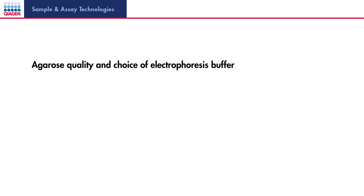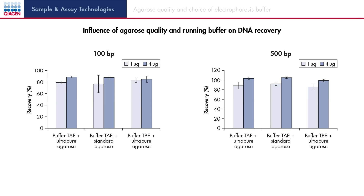The first evaluation parameter is the agarose quality used for electrophoresis. In this study, standard agarose and ultra-pure agarose were compared. Additionally, the influence of the running buffer — TAE or TBE — was analyzed. Two fragment sizes, a 100 base pair fragment and a 500 base pair fragment, were tested. For each test, one microgram and four micrograms of DNA were applied to the column.